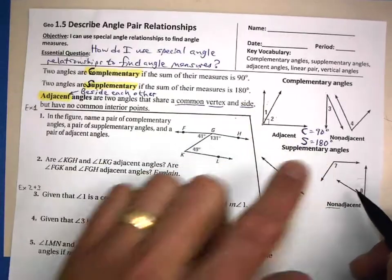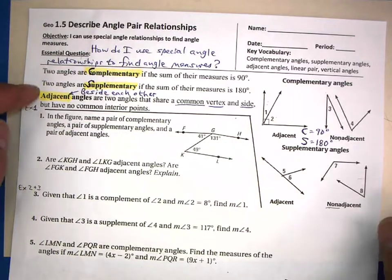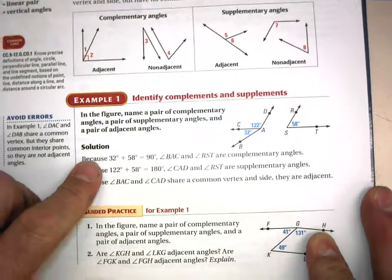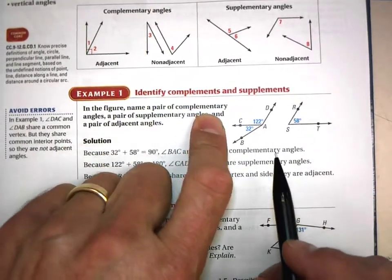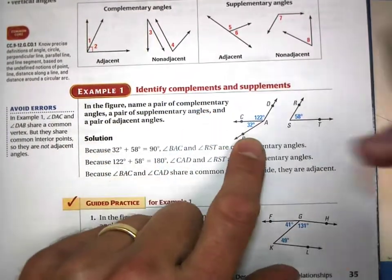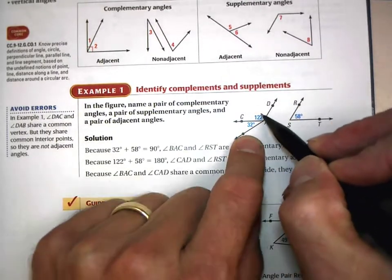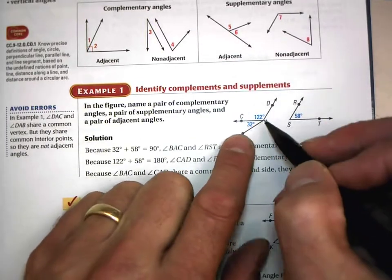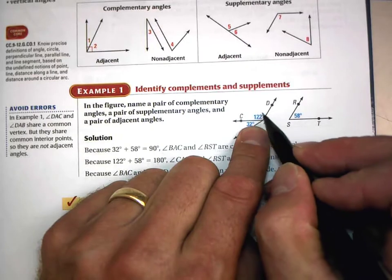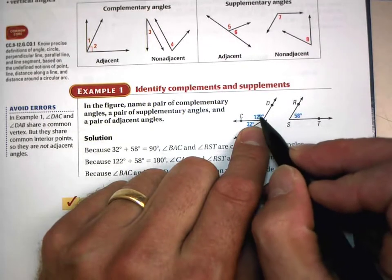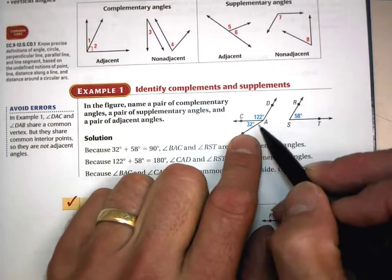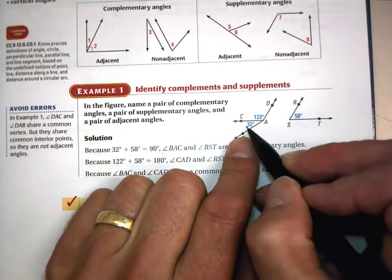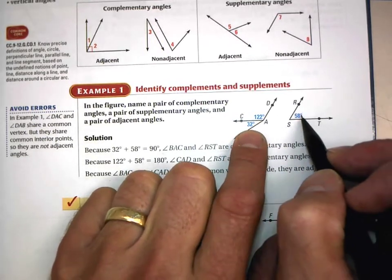You can also have non-adjacent supplementary angles that add up to 180 degrees. Looking at example one: we need to name a pair of complementary angles. The 122-degree angle is already past 90, so that won't work. But the 32-degree and 58-degree angles — add those together and you get 90 degrees. Even though they're not adjacent, they are complementary.